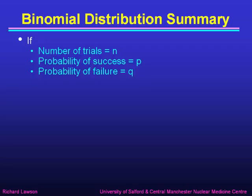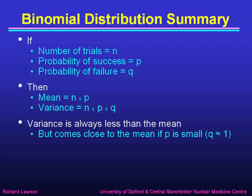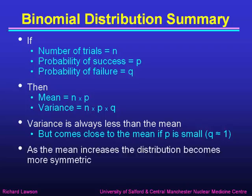To summarise the properties of the binomial distribution: we have a number of trials n, a probability of success p, and a probability of failure q, where p and q must add up to 1. The mean turns out to be n times p — the mean number of successes — and the variance is n times p times q, which is just the mean times q. The variance is therefore always going to be less than the mean, because q has to be less than 1. But if p is very small, then q becomes close to 1, so the variance is only slightly less than the mean. And as the mean increases, the distribution becomes more and more symmetric.